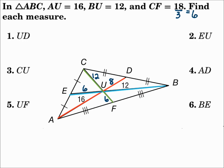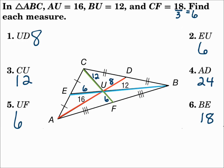So now let's answer the questions. Number 1, the measure of segment UD is 8. For 2, the measure of segment EU is 6. Number 3, the measure of segment CU is 12. Number 4, the measure of segment AD, which is 16 plus 8, which is 24. Number 5, the measure of segment UF, which is 6. And number 6, the measure of segment BE, which is 6 plus 12, or 18.